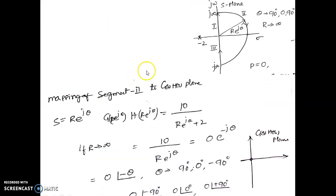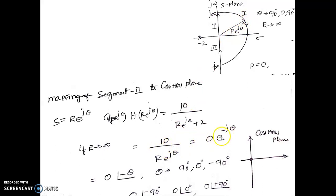For segment 2, the radius R tends to infinity and s equals R·e^(jθ) where theta ranges from 90 degrees to 0 to minus 90 degrees. Substituting this into the transfer function and letting R tend to infinity, the magnitude becomes 0 and the angle is minus theta. Since the magnitude is 0 regardless of angle, the entire second segment maps to a dot at the origin in the G(s)H(s) plane.